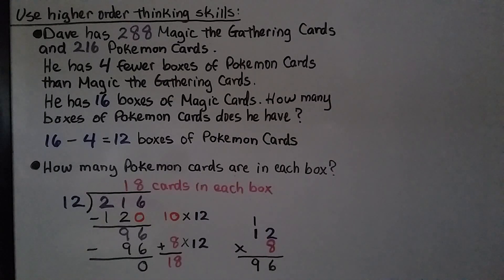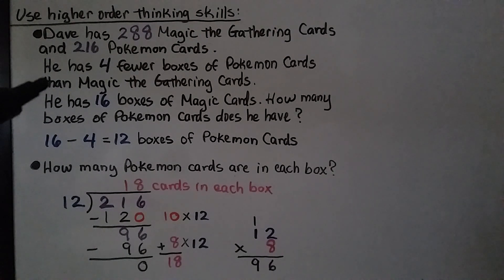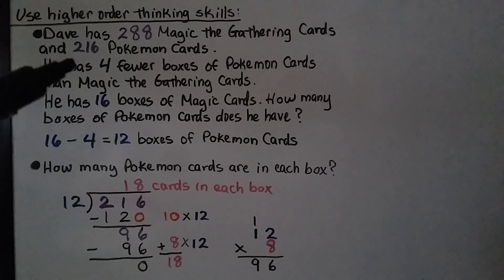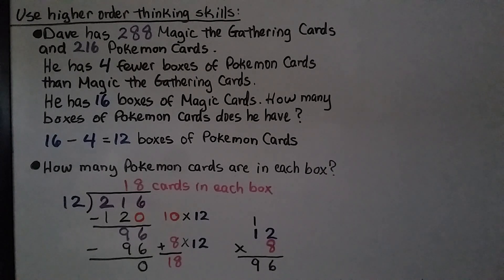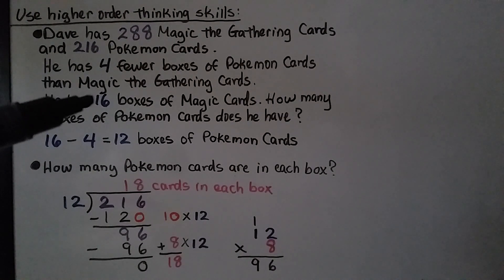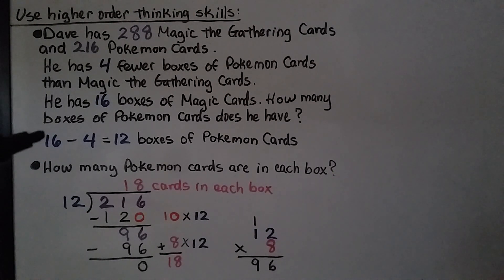Now let's use some higher order thinking skills. Dave has 288 Magic the Gathering cards and 216 Pokemon cards. He has 4 fewer boxes of Pokemon cards than Magic the Gathering cards, and he has 16 boxes of Magic cards. How many boxes of Pokemon cards does he have? Well, 16 boxes of Magic minus 4 fewer boxes means 16 minus 4 equals 12 boxes of Pokemon cards.